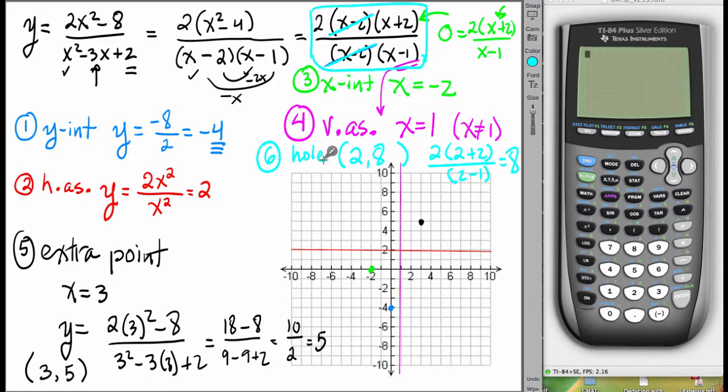So there is a hole that we'd go to the graph, go to 2, 8, and literally draw a hole on the graph.